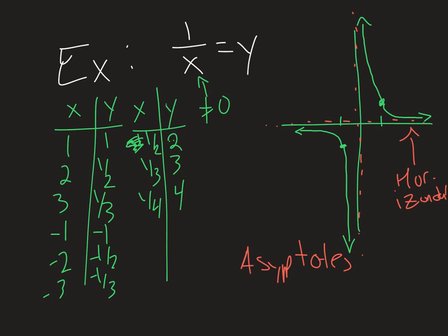Likewise, we have a vertical one at x equals zero. And we'll talk about how to find those in the next video, but the idea for this was to establish what the base case looks like and what these asymptotes look like and where they come from.